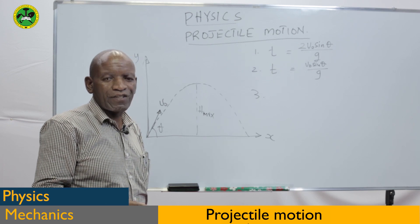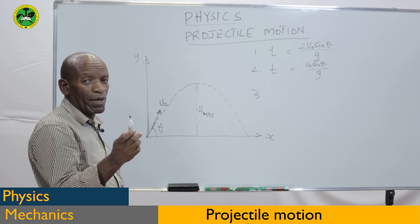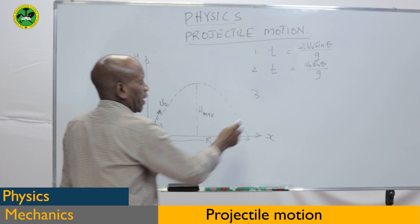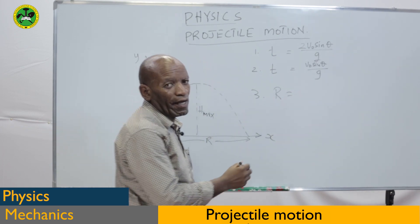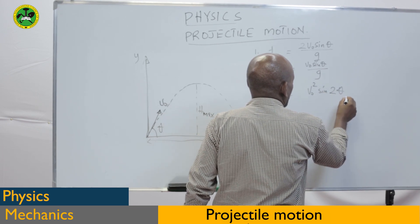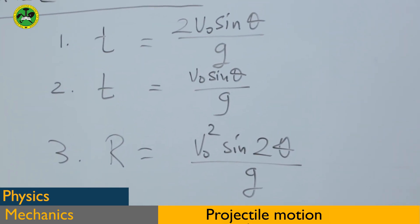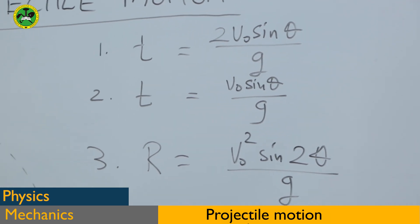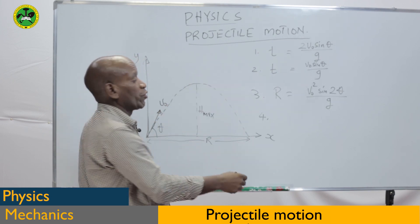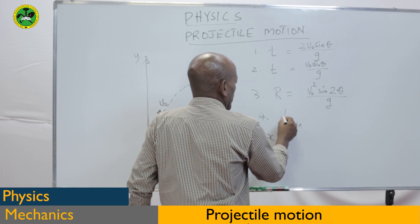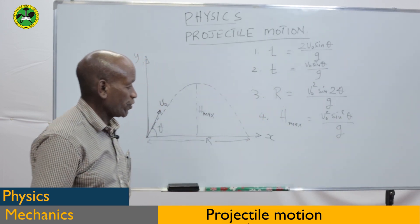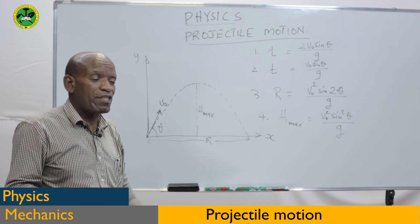The third formula is the range — the horizontal distance covered by a projectile from the point of projection until it reaches the ground: R = v₀²·sin 2θ / g. The fourth and final basic formula is the maximum height: H = v₀²·sin²θ / (2g). These are the four basic formulas which I understand you have already learned and know how to derive.